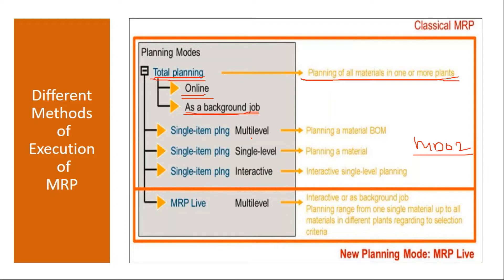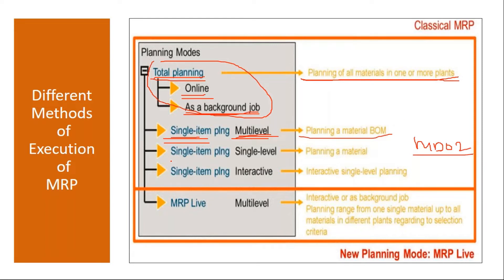As a background job, the system will run based on a time you specify. This is total planning. Next is single item planning — you run MRP for only one material, which is what we've been doing all the time. Single item multi-level means planning a single material along with its entire BOM structure. Another option is single item single level, but this is not used much.